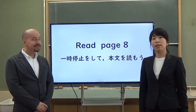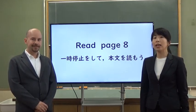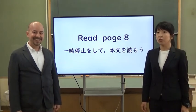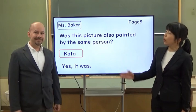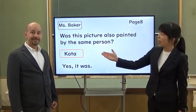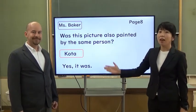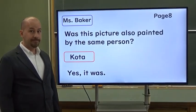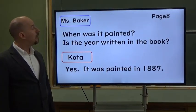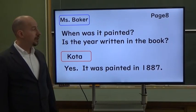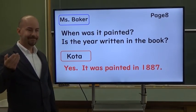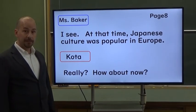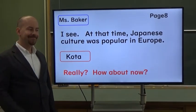On page 8, there is a dialogue with Ms. Baker and Kota, so please read it. Let's begin. Did you finish reading? So next, let's read with Brian Sensei. Brian Sensei is Ms. Baker, you are Kota. Okay, let's start. Was this picture also painted by the same person? When was it painted? Is the year written in the book? I see. At that time, Japanese culture was popular in Europe.